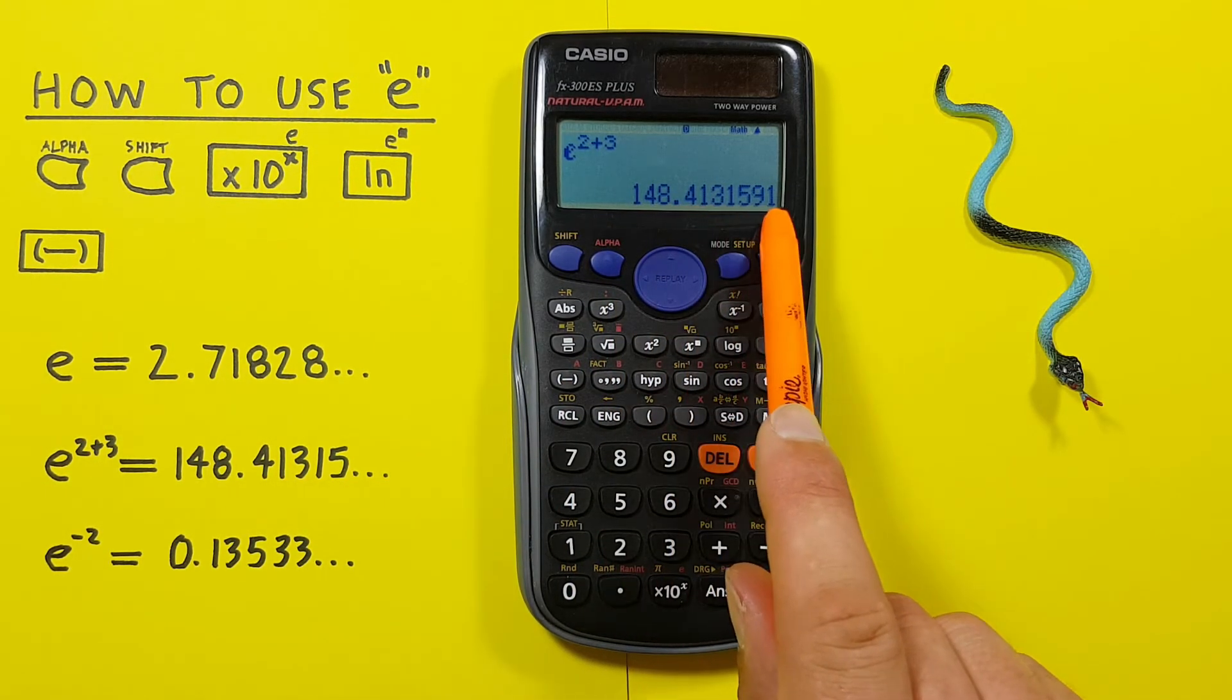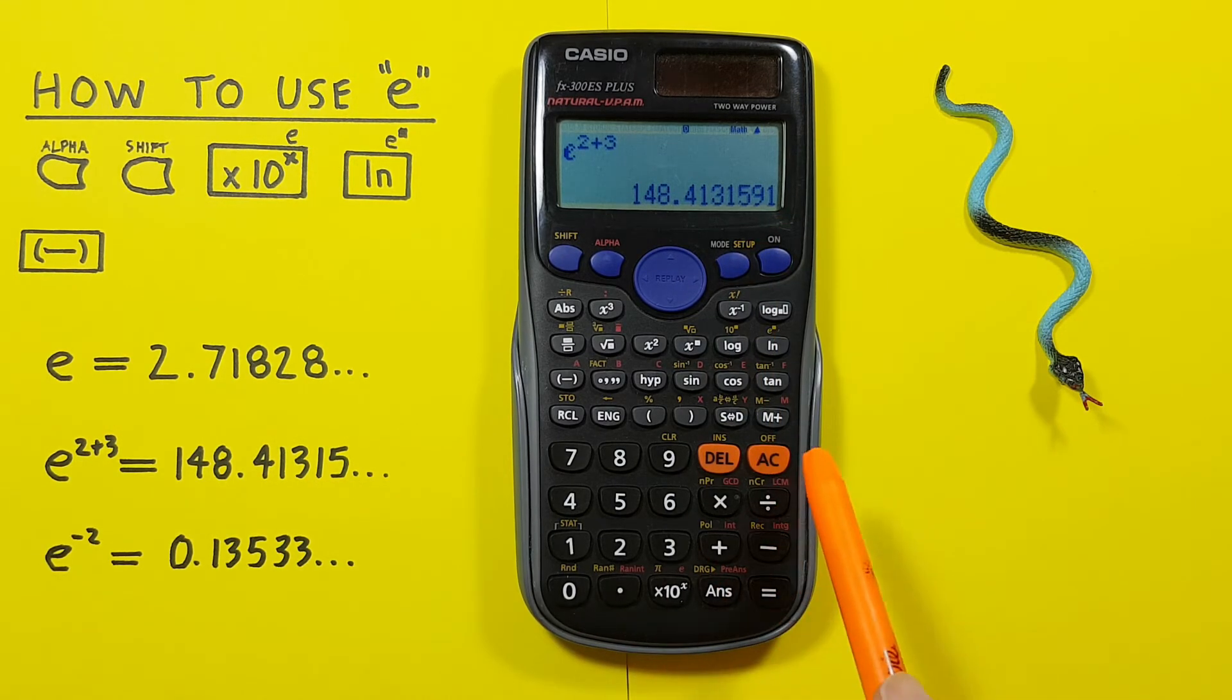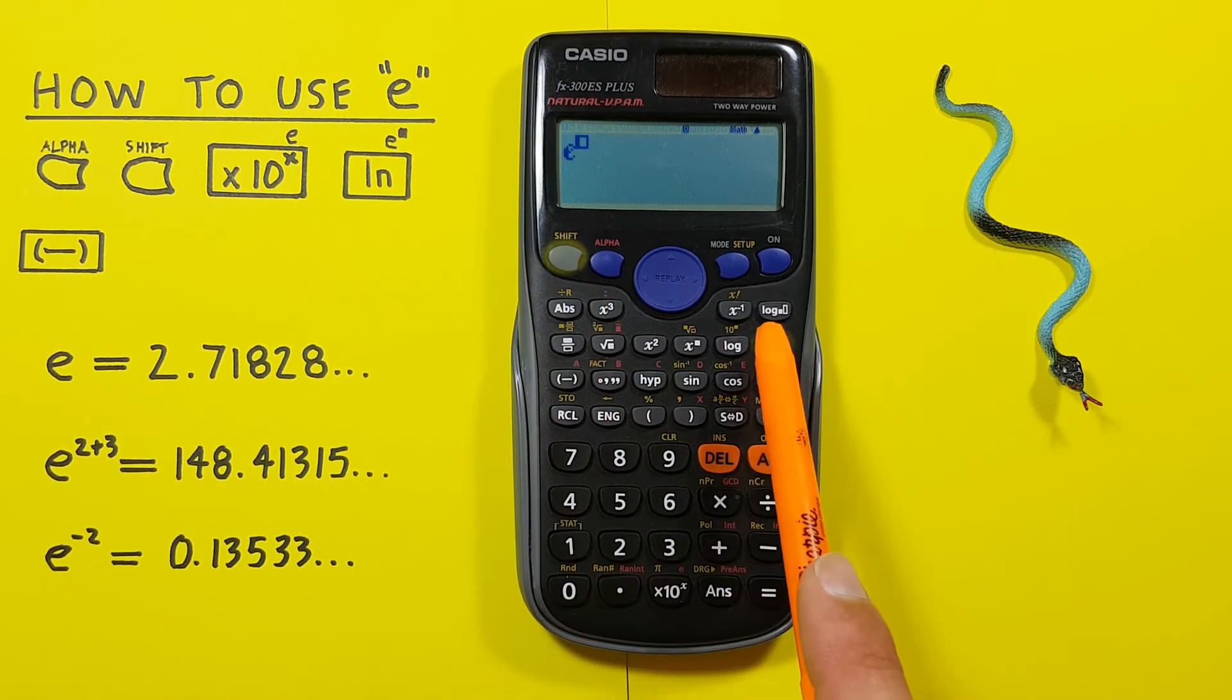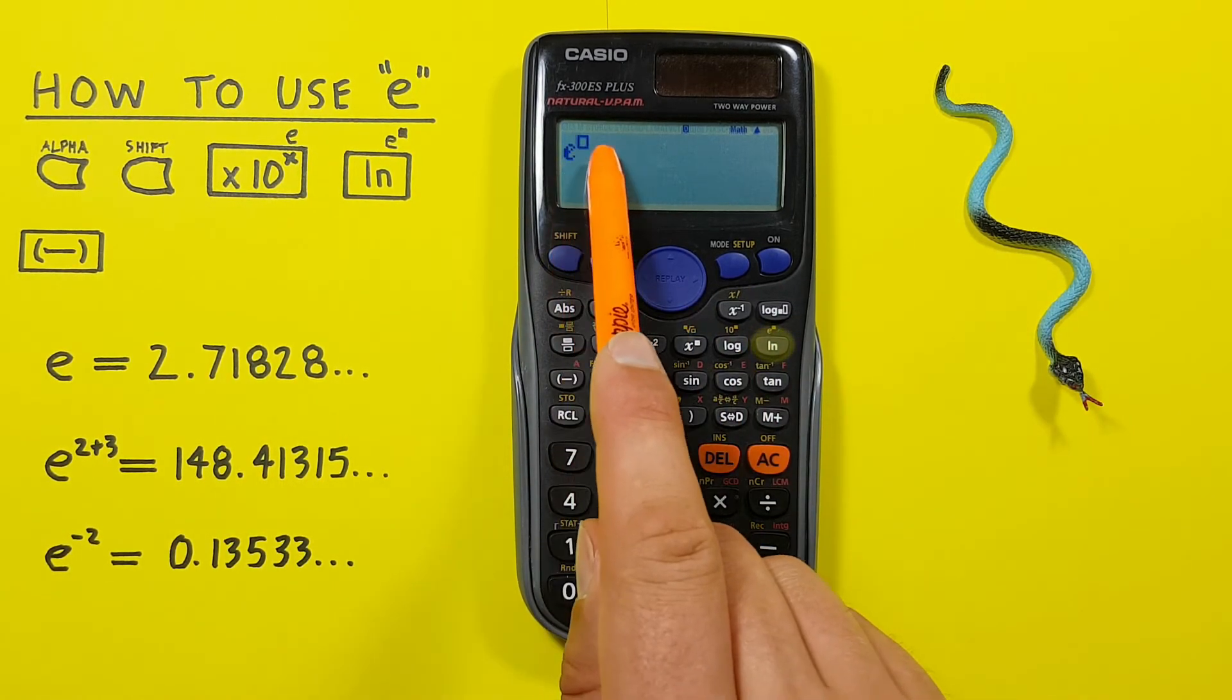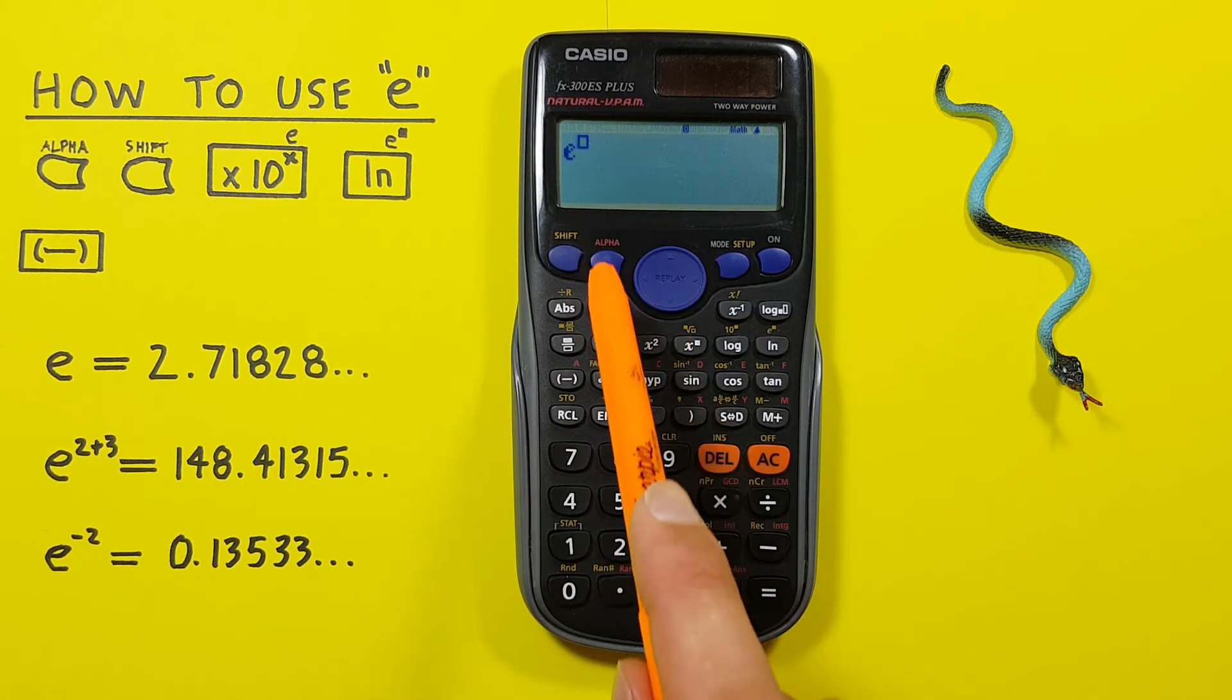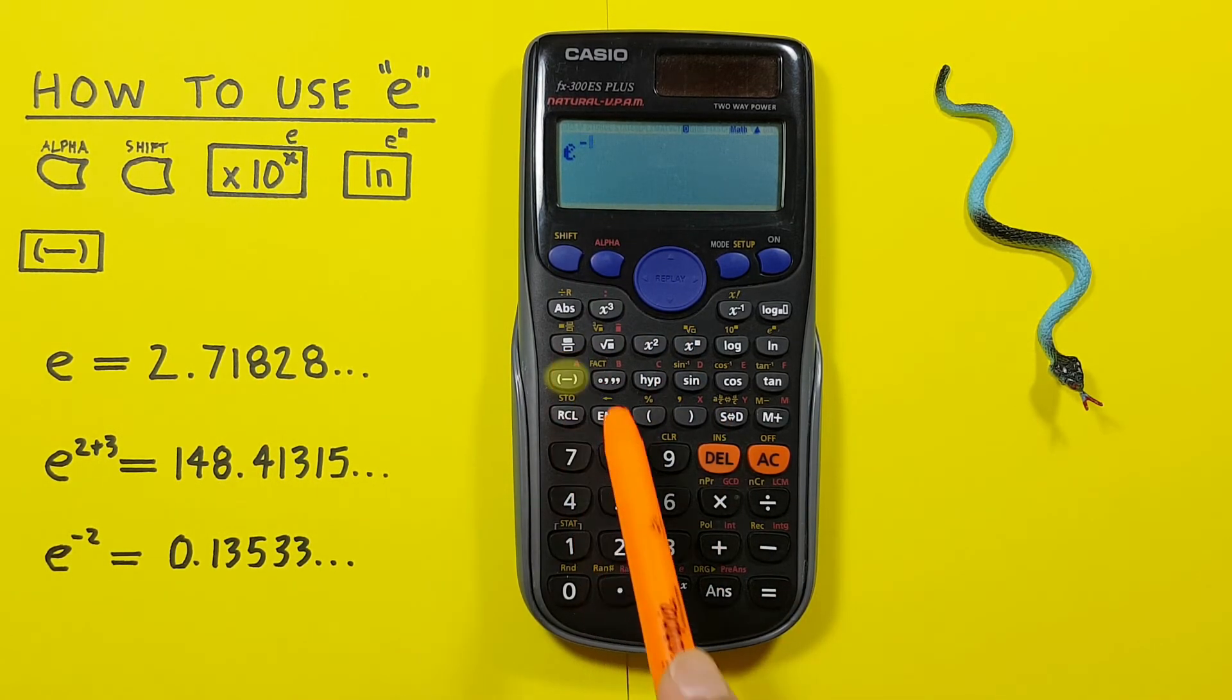We can also use this to get negative exponents, like E to the power of negative 2. We go shift LN and get our E with the exponent box, and then we use the negative key and 2.